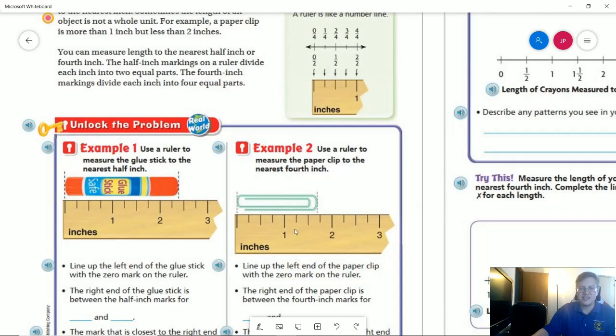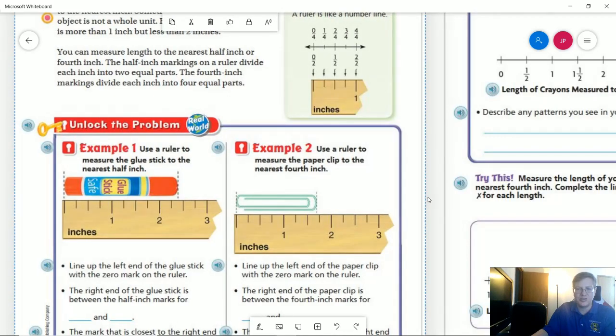So my second example with the paperclip, if I were going to the nearest half inch, I would probably go backward to here and say that it is closer to one and a half inches than it is to two. If we were going to the nearest quarter inch, we are going to go here and we would say that it would be one and three quarter inches.